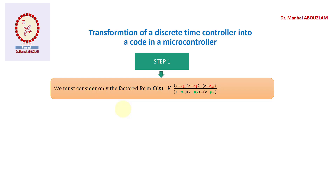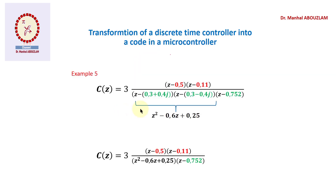We continue in this step with numerical examples to improve the factored form. Suppose we have a factored form with two complex conjugate roots — we cannot consider this factored form for numerical application. Instead, in place of these two polynomials of degree one, we put the corresponding polynomial of degree two, found by multiplying those two polynomials of degree one. The final considered form has polynomials of degree one for real roots, but a polynomial of degree two for the two complex conjugate roots.